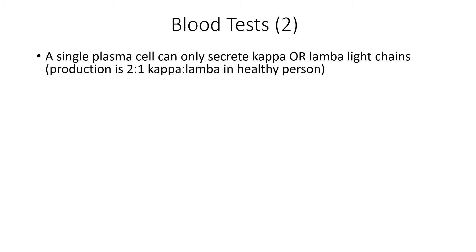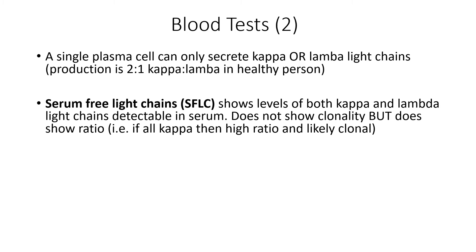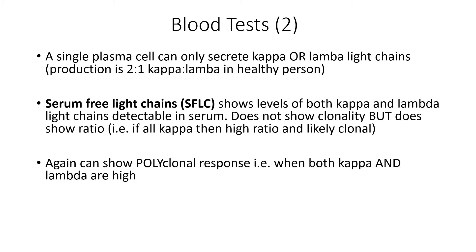The other main blood test is the serum-free light chain ratio. Each plasma cell, whether in a healthy or unhealthy person, can only secrete either kappa or lambda light chains — they are restricted. Production in a normal healthy person is two-to-one in favor of kappa. The serum-free light chain ratio quantifies the levels of both kappa and lambda in the serum. This can't directly show clonality, but it shows you the ratio and suggests clonality. For example, if your test showed thousands of kappa and hardly any lambda, that's not a normal ratio and suggests a clone is producing all of that kappa.